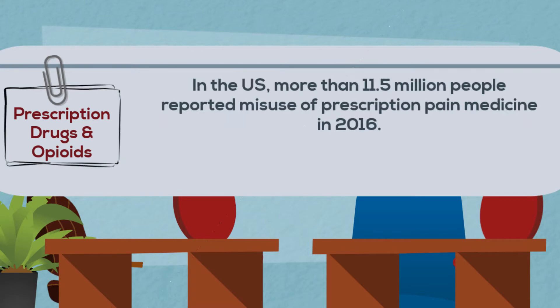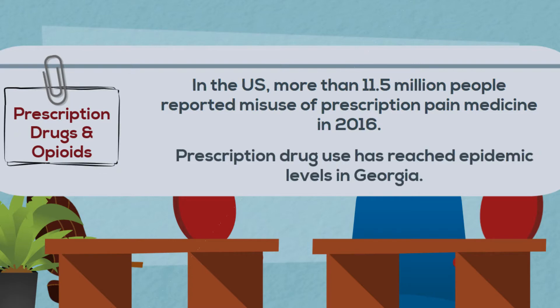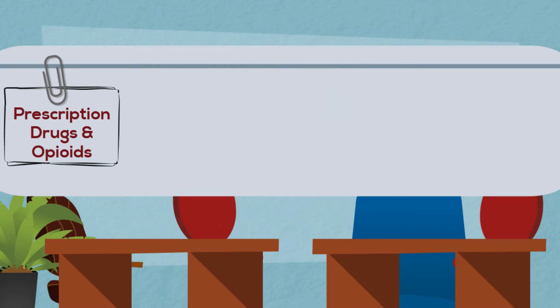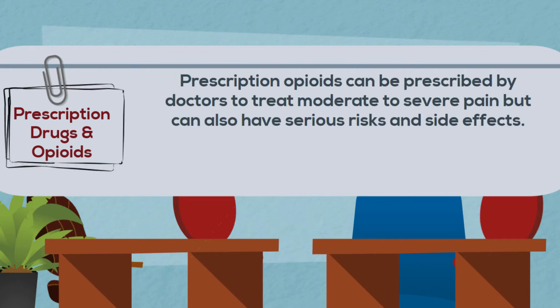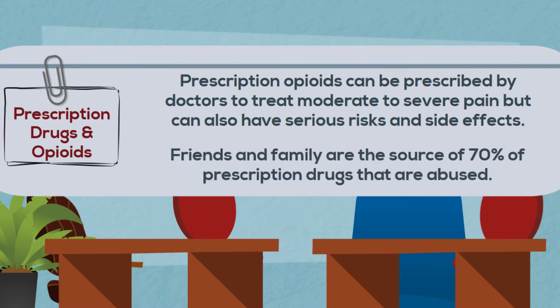In the U.S., more than 11.5 million people reported misuse of prescription pain medicine in 2016, and prescription drug use has reached epidemic levels in Georgia. Prescription opioids can be prescribed by doctors to treat moderate to severe pain, but can also have serious risks and side effects. Friends and family are the source of 70% of prescription drugs that are abused.